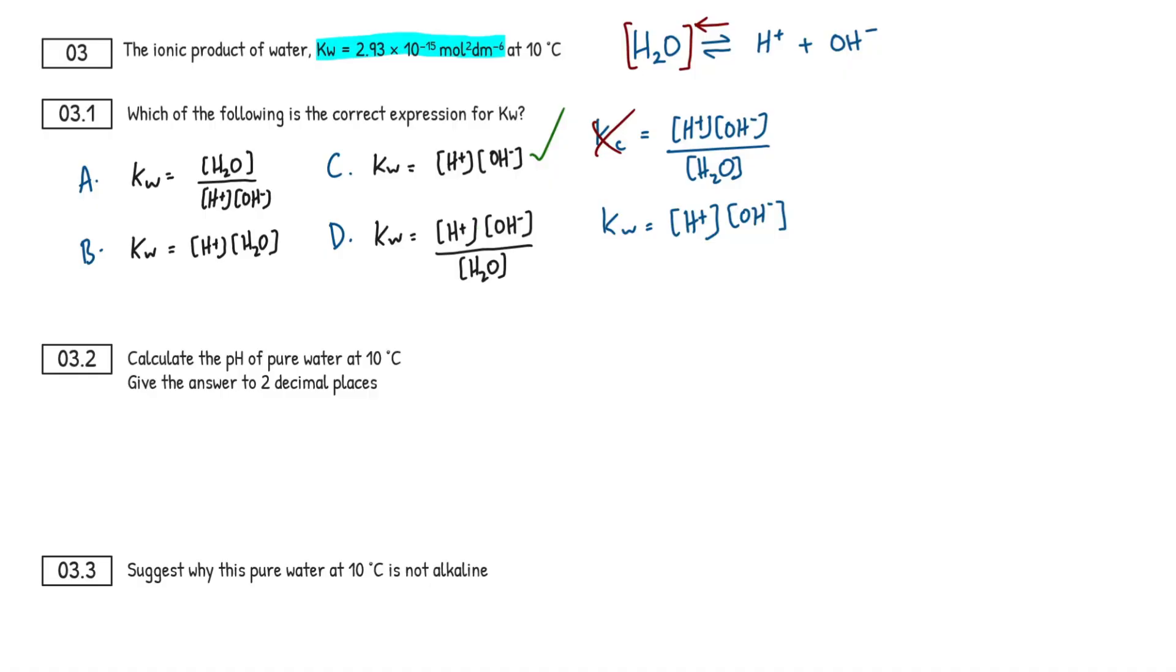Real easy question to get the juices flowing. Let's go on to question 3.2. So some more theory here. Calculate the pH of pure water at 10 degrees Celsius and give our answer to two decimal places. pH for A-level chemistry, always remember two decimal places. That's always what they want to see it as. Just keep that in mind.